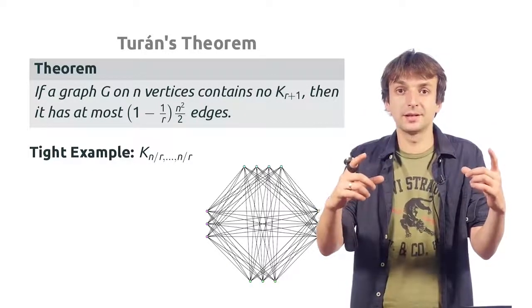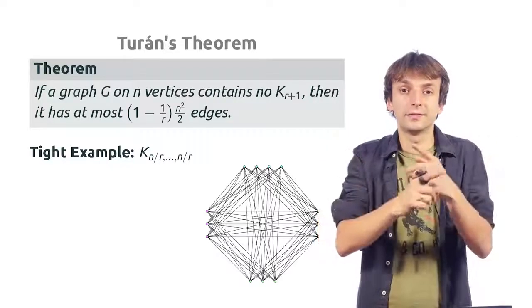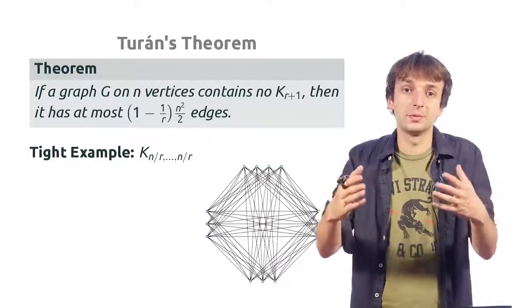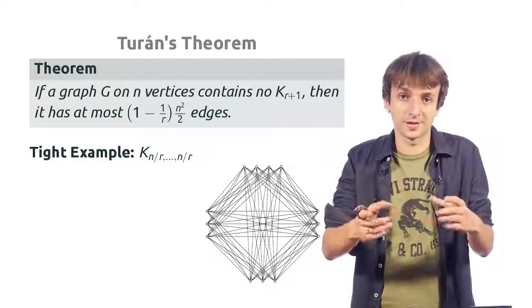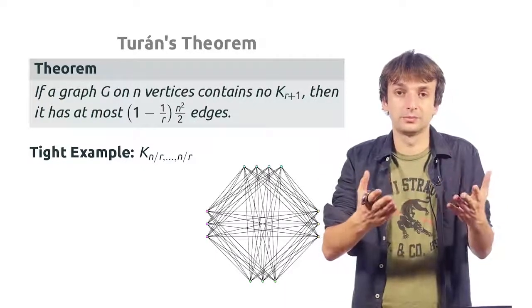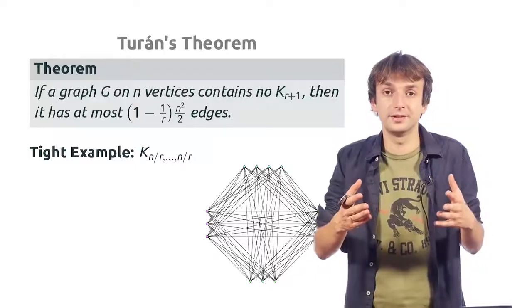and the graph has all edges between these two parts. This would be n squared over 4 edges, exactly the number from Mantel's theorem.